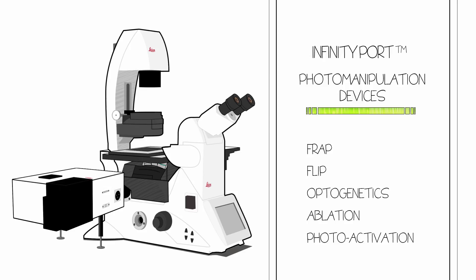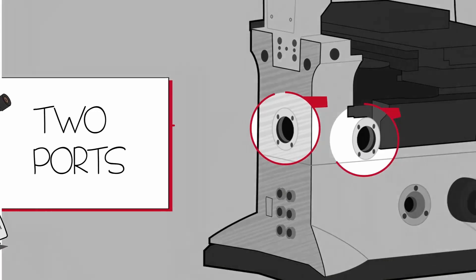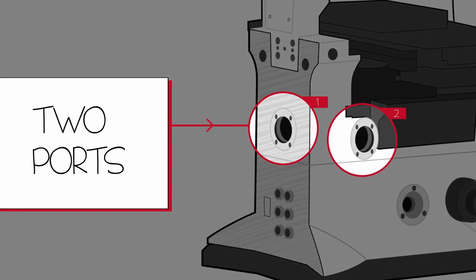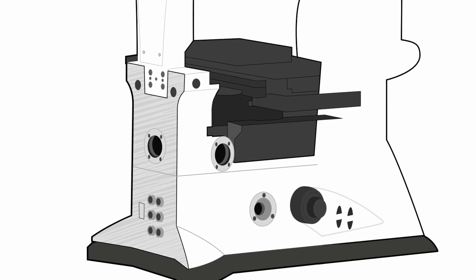You can easily combine applications by adding one or more advanced fluorescence imaging modules, such as the Infinity Scanner and Infinity Turf. These modules allow you to expose your sample to multiple techniques simultaneously, giving you deeper insights into your cells.